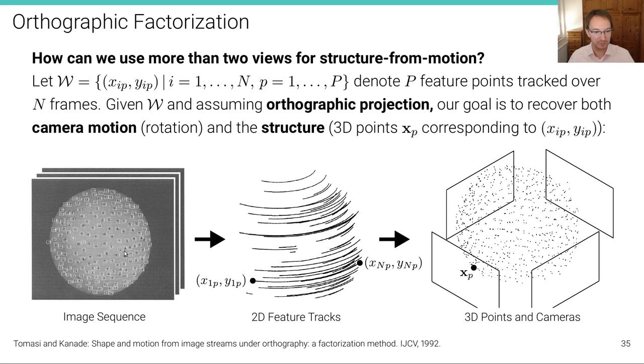Here's an illustration on the bottom. We have a sequence of images where we detect and track features, for instance, using the SIFT descriptor or by using a Lucas-Kanade feature tracker. We get these 2D image trajectories of this sphere that is rotating here, and then we are reconstructing both the camera planes of these orthographic cameras and the 3D structure in terms of the 3D points.